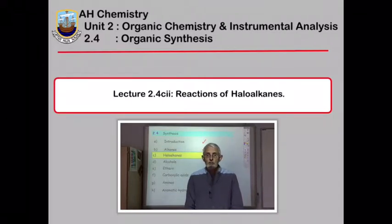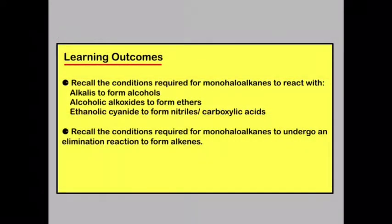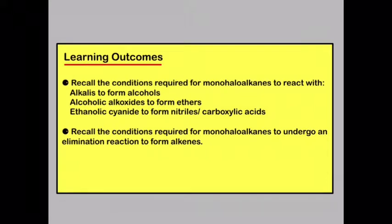In this lecture we're going to look at the main reactions carried out by haloalkanes. By the end of this lecture you should be able to recall the conditions required for mono-haloalkanes to react with alkalis to form alcohols, alcoholic alkoxides to form ethers, and ethanolic cyanide to form nitriles and carboxylic acids. You should also be able to recall the conditions required for mono-haloalkanes to undergo an elimination reaction to form alkenes.